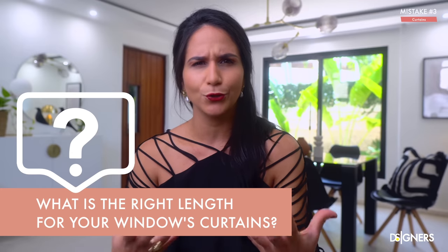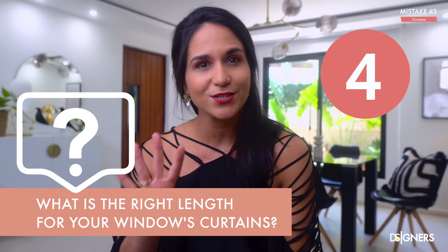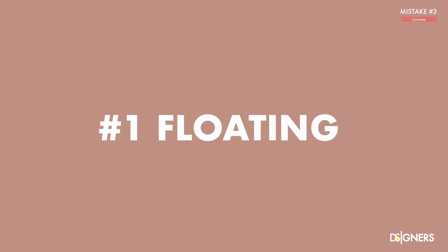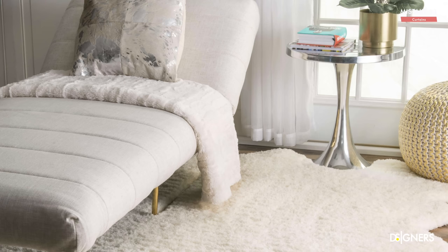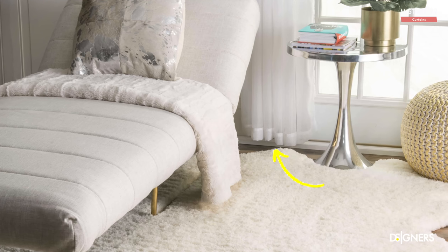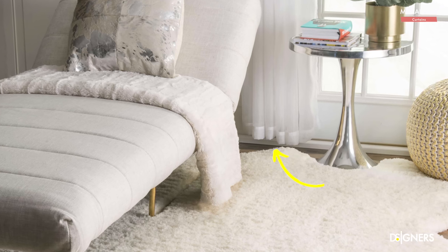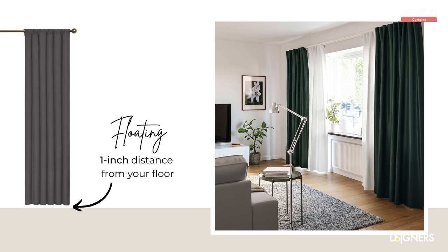Mistake three is having too much or falling short on your curtain length. This is the trickiest part of your window treatments — getting the right length. There are actually four ways to hang curtains. For a contemporary look, or where you have a highly textured carpet that might damage the hem of your curtain, the float is the best option. You should have one inch of distance from your floor to the hem of your curtain.